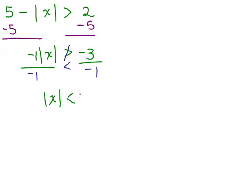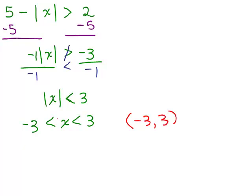On the right-hand side, negative 3 over negative 1 gives us positive 3. So now I've got it in the form of an absolute value of something less than a positive number. This is the easy part — we did problems like this in the very first video on absolute value inequalities. What's inside is just x, so it's just in between negative 3 and positive 3. In interval notation that gives us between negative 3 and positive 3, and if we graph it, it looks like the region in between negative 3 and positive 3.